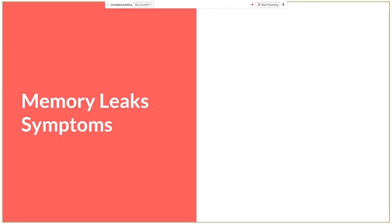As a daily problem, memory leaks have some symptoms related to the performance of the page. The most significant impact is if we see that the page progressively loses performance over time — maybe we have to pay more attention because there could be some leaks. The second symptom is when the page performance is consistently bad, always slow, and the user cannot interact smoothly with the UI.